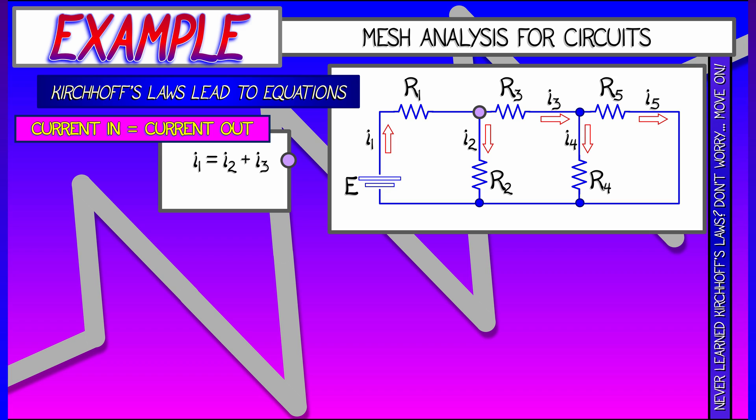How much current is flowing out? Well, there are two wires going out, I2 and I3. So I1 equals I2 plus I3. That's it, conservation of current.